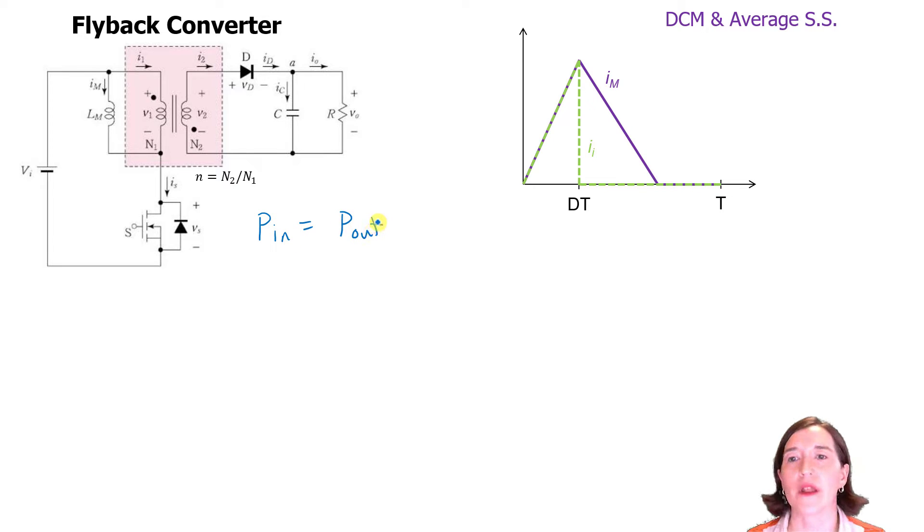The power in and the power out have to balance assuming that everything is ideal. We can describe the output power as this voltage V out, because this is over the load, it's over a resistive load. So we can put that directly as V out divided by R, and we're going to square this V out. So it's V out squared over R is the output power.